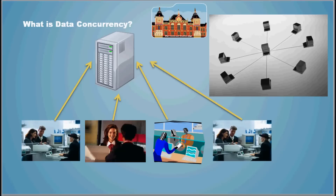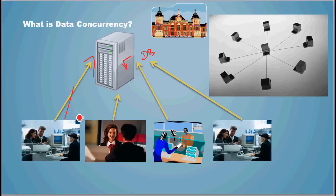What is data concurrency? As we saw in the previous video, this is a ticketing system where multiple ticketing officers are using a centralized database system. The process of this DBMS system allowing multiple people to access data simultaneously or concurrently is called data concurrency — basically allowing the database system to allow multiple users to access data.